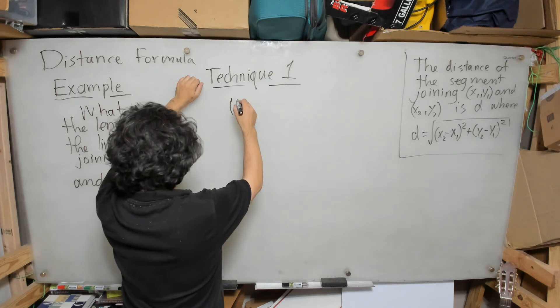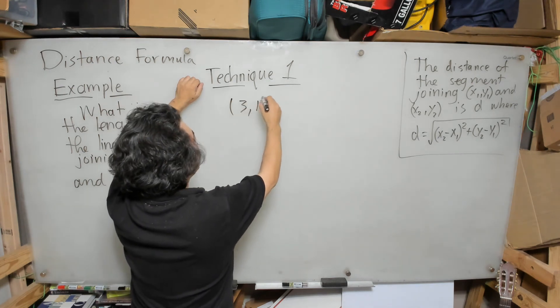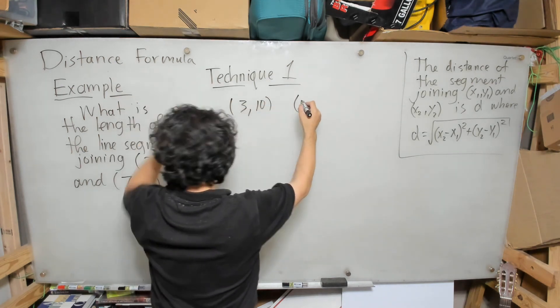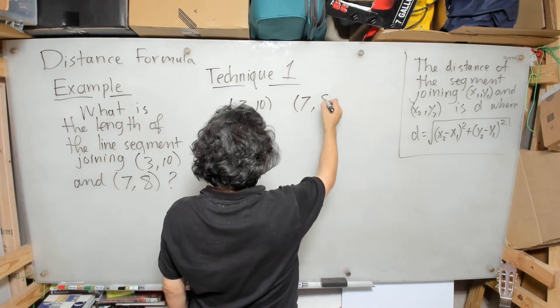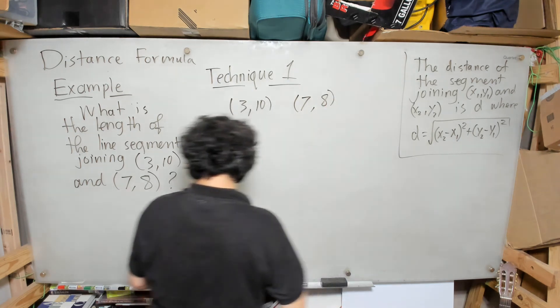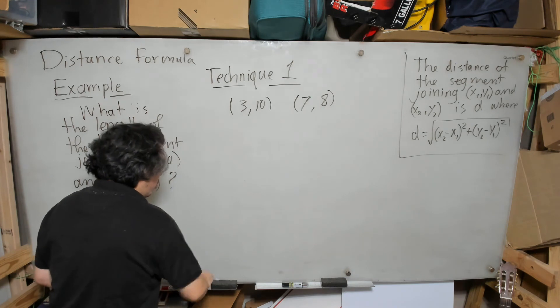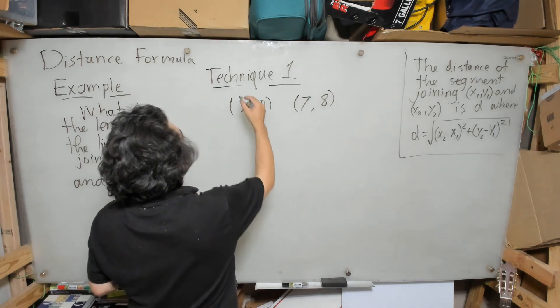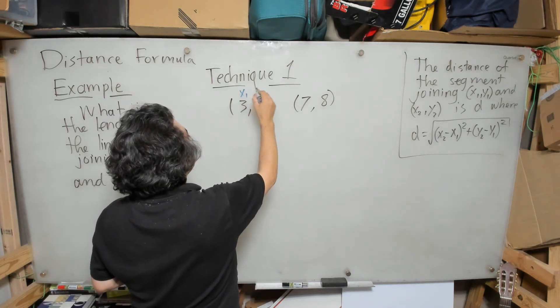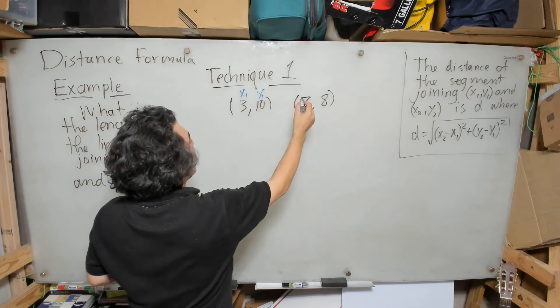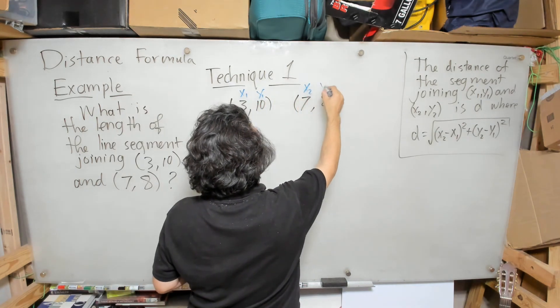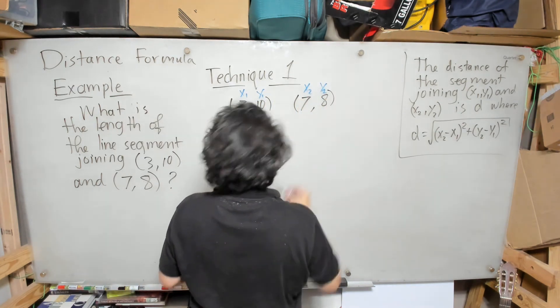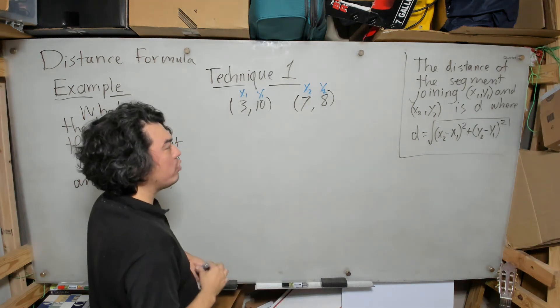Here what I'm going to do is list my points. I know sometimes I might be too careful about this, but I want you guys to get into this habit of labeling stuff the way I do because that will help prevent you from making what one might call careless mistakes. So I'm going to label this one x₁,y₁ and I'm going to label this one x₂,y₂.